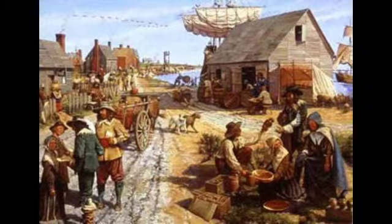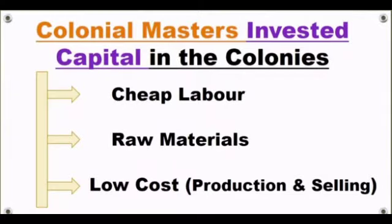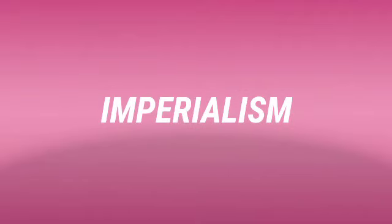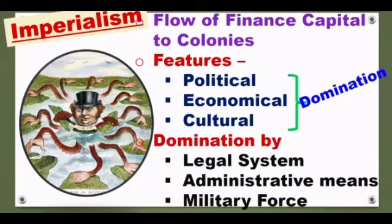What are the major factors that induced capitalist nations to invest capital in colonies? Cheap labour, availability of raw materials, and low cost involved in manufacturing and selling goods in colonies. The distinctive phase of the flow of finance into colonies is known as imperialism.